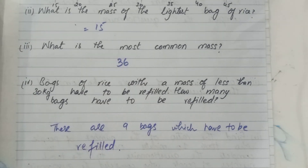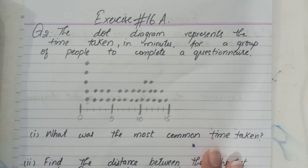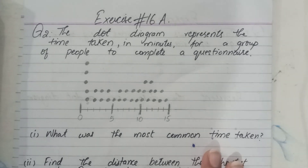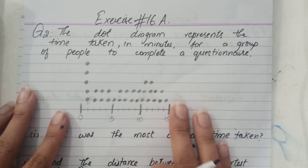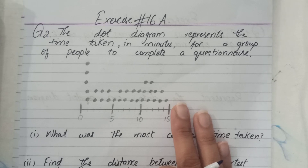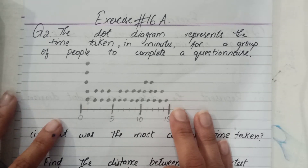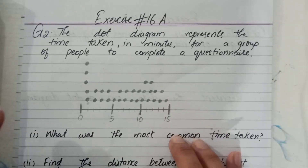Question number one is solved. Now question number two: the dot diagram represents the time taken in minutes for a group of people to complete a questionnaire. A dot diagram is provided to us and we can easily read this diagram to solve the questions.